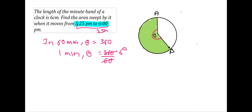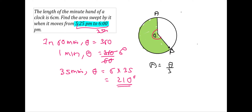From 5:25 PM to 6 PM is 35 minutes. In 35 minutes the angle made by the minute hand is 6 multiplied by 35, which equals 210 degrees. Since this is a sector, the area of the sector is theta over 360 multiplied by pi r squared. Theta is 210, divided by 360, and pi is 22 over 7.